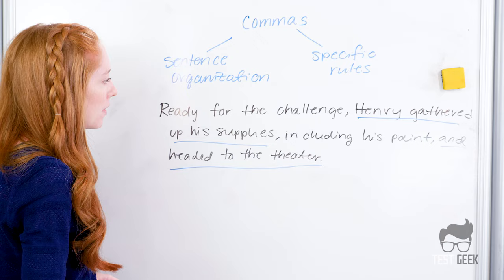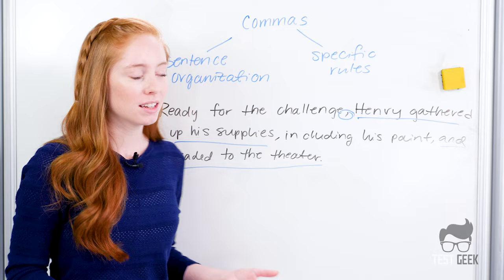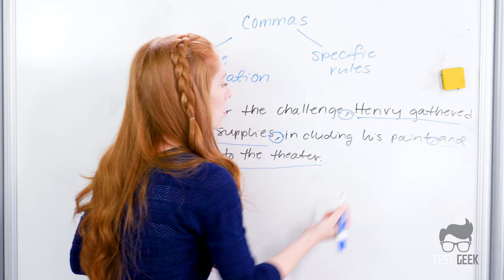Everything else in the sentence is additional information. We surround all that stuff with commas. So the first part, ready for the challenge, is at the beginning of our sentence. We put a comma after that to indicate that this bit is additional information.